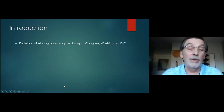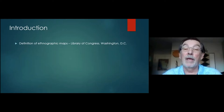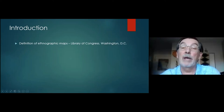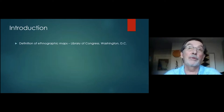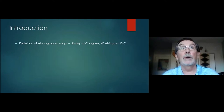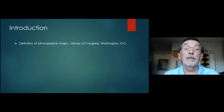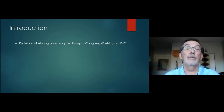The Library of Congress has a definition of ethnographic maps. What are ethnographic maps? Typically, when it comes to ethnographic maps, there are maps that show cultural areas and maps that also show linguistic groupings. Some are combined. The definition is very broad, and the American definition calls these ethnographic maps American Indian maps.